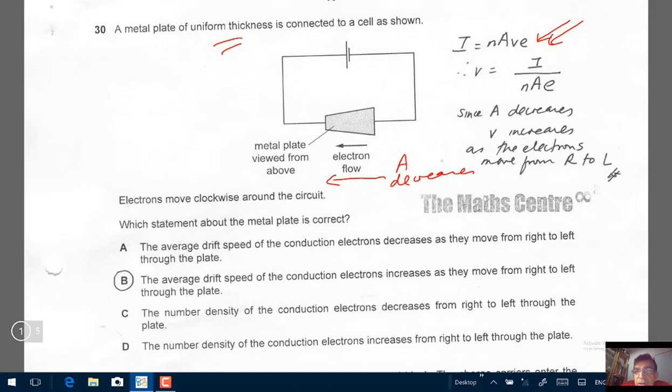Area of the cross section decreases. So when this decreases, the denominator goes down. This thing here is going to go up. So correct response is B. The average drift speed of the conduction electrons increases as they move from right to left through the plate. So I've written that here. As A decreases, V increases as electrons move from right to left.